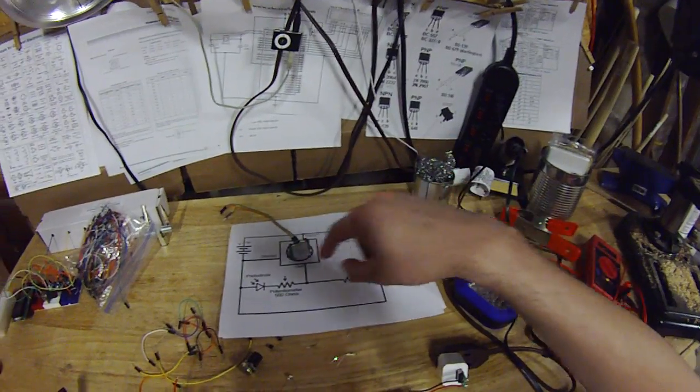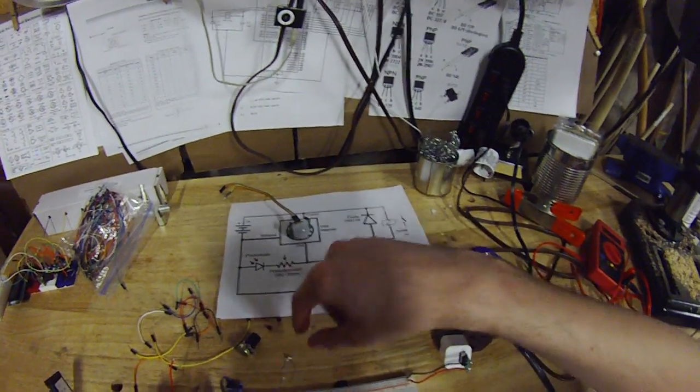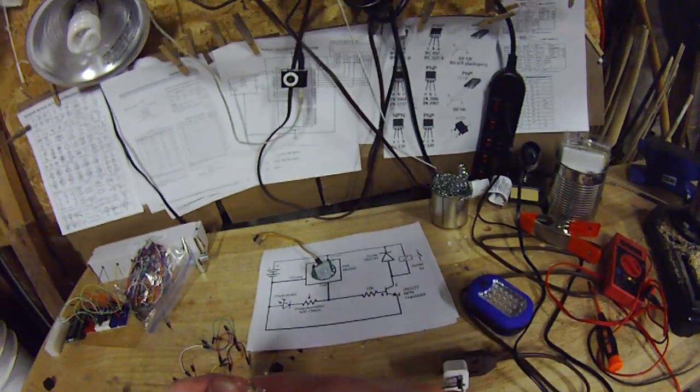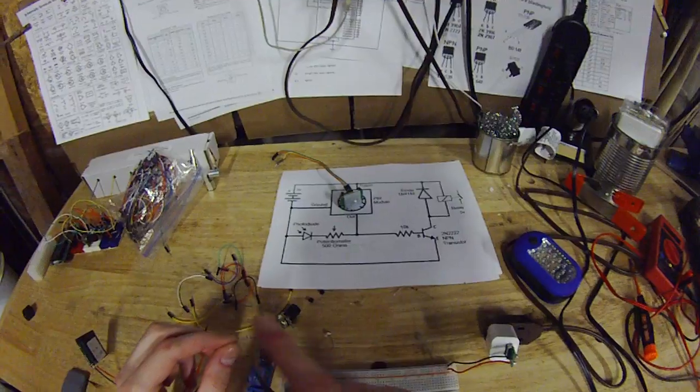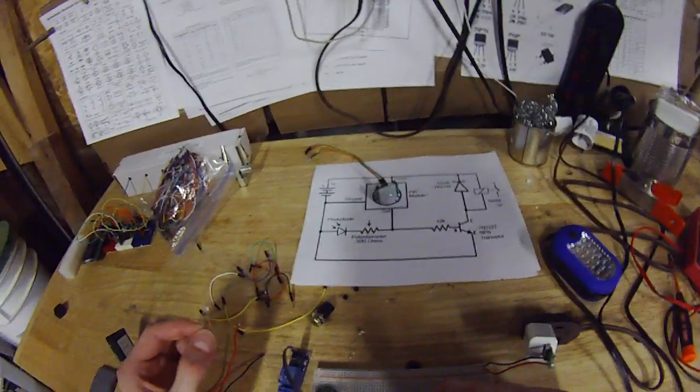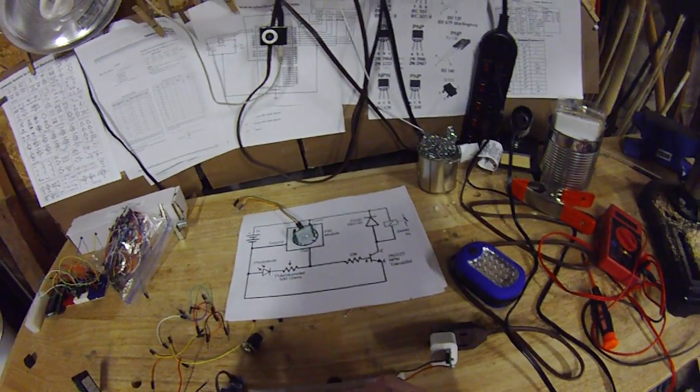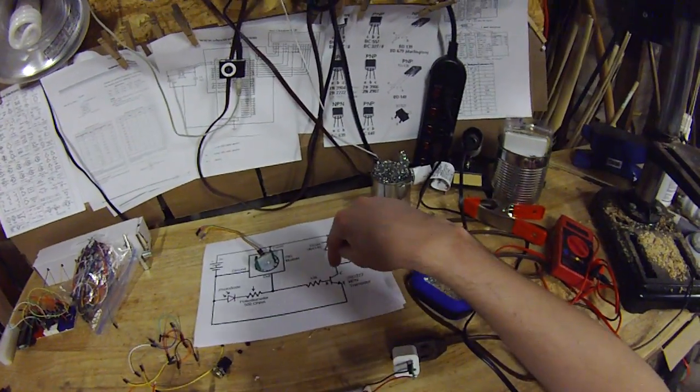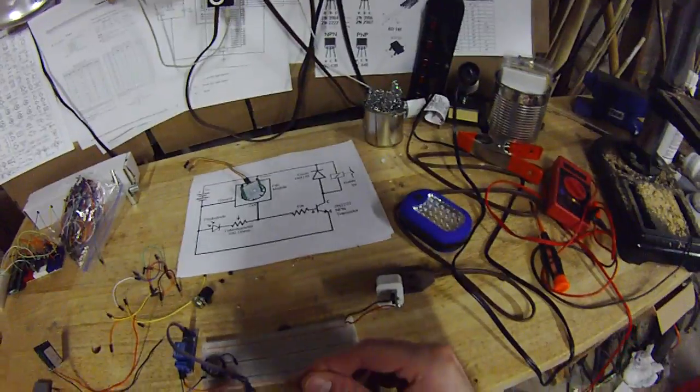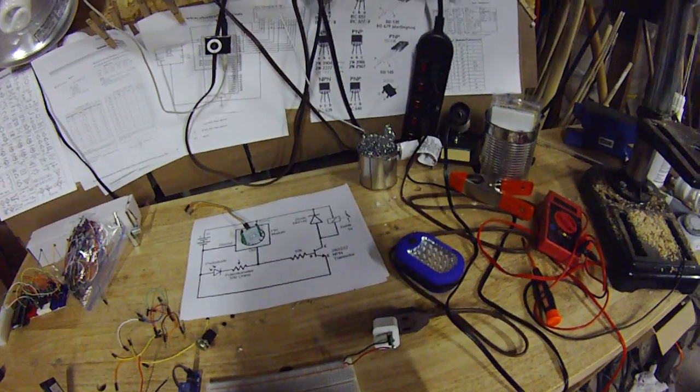Oh and then how it detects light is a photo diode which is this. It looks like an LED but it's actually kind of the exact opposite. When light is hitting it, it becomes conductive and allows electricity to pass through it. So it shorts out this area. So it's unable to turn on the transistor.